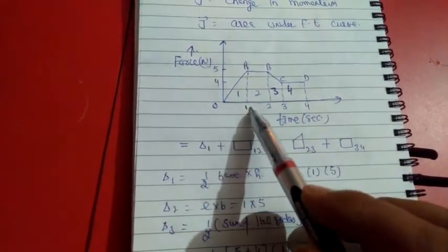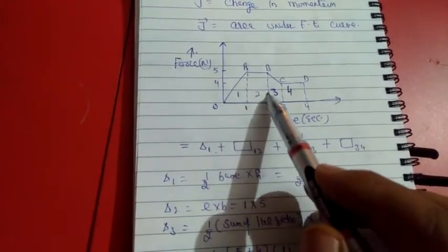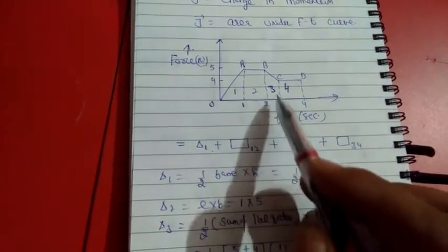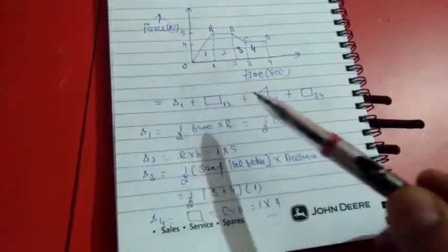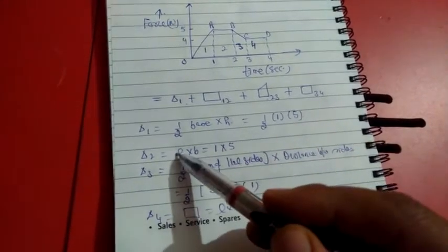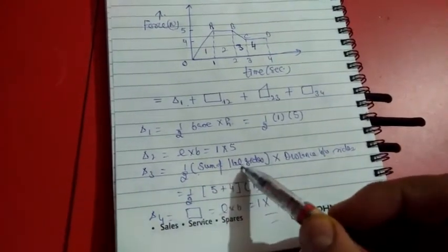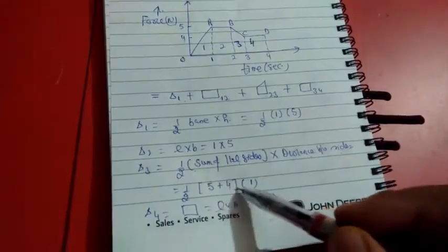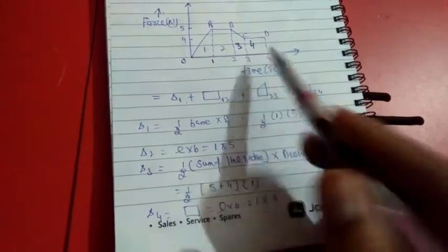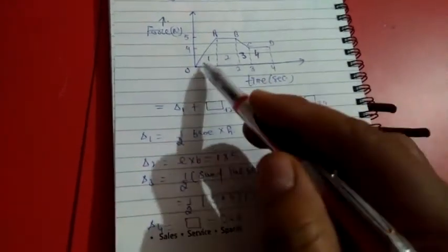For the first figure OA1, it is a triangle, so we find the area = (1/2) × base × height = (1/2) × 1 × 5. For figure AB12, it is a rectangle: length × breadth. For figure BC23, it is a trapezium: area = (1/2) × (sum of parallel sides) × distance between them = (1/2) × (5 + 4) × 1. The last figure CD34 is again a rectangle: length × breadth. When we add all four areas, the total area gives the impulse of the body.